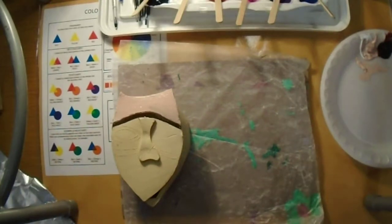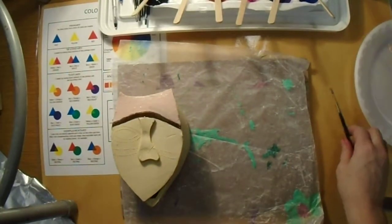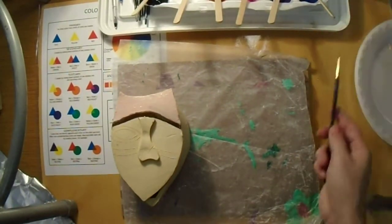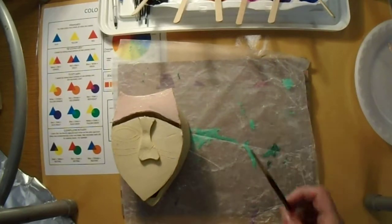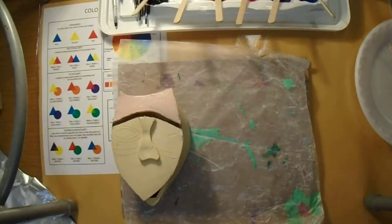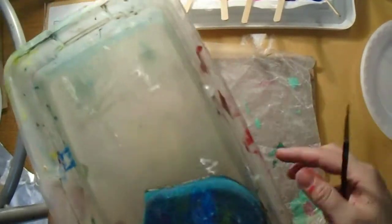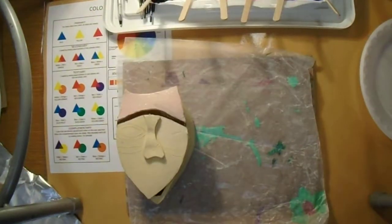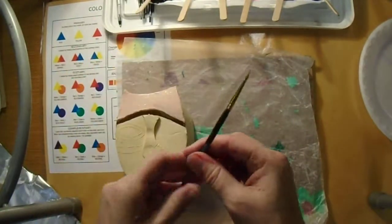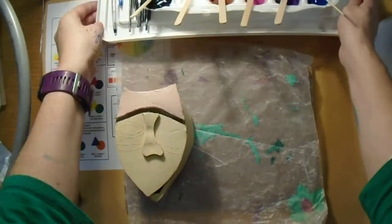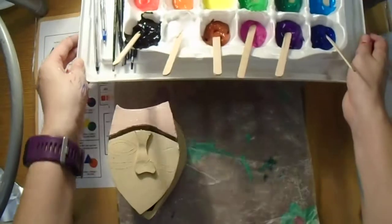So at the end of class, when it's time to clean up, first thing that you're going to do is clean out your paint brush. You're going to swish it around in water, wipe it on the sponge. Then you're going to set your clean paint brushes back in the tray next to your egg crate.